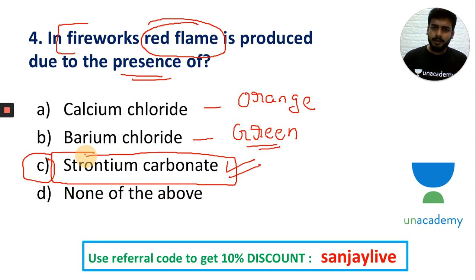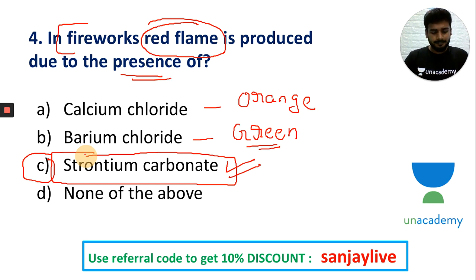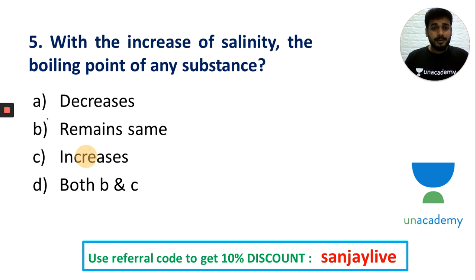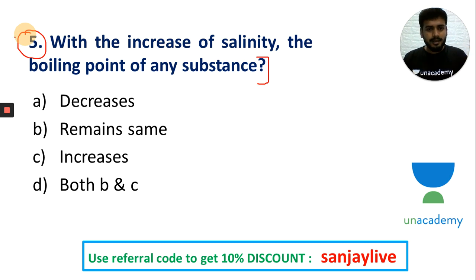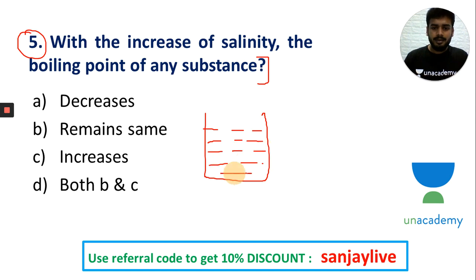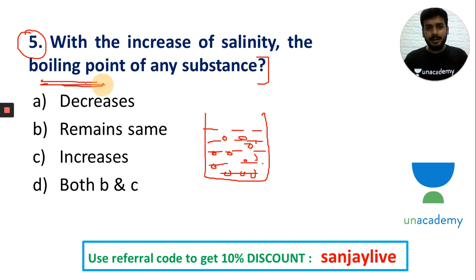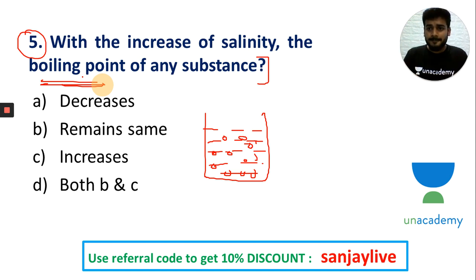Strontium carbonate gives a red color flame. With the increase of salinity, the boiling point of any substance increases. This is an important concept — boiling point increases with salinity.